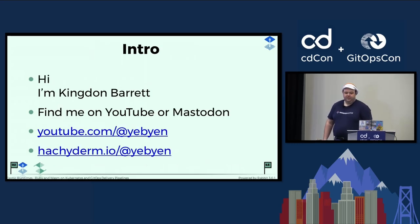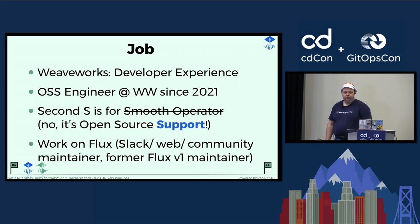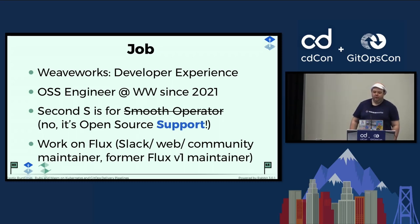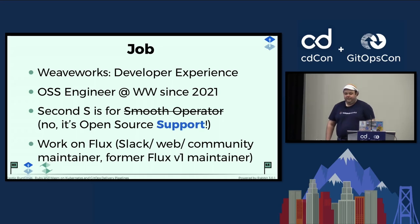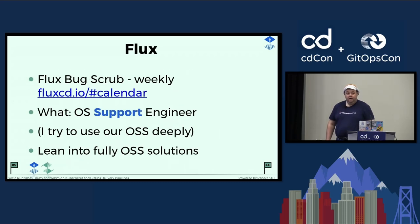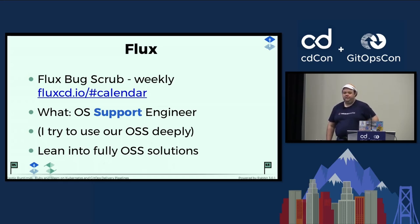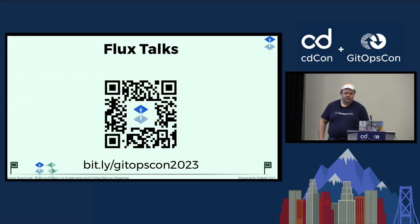I'm Kingdon. You can find me on YouTube and Mastodon. I'm a developer experience member of the Weaveworks developer experience team, OSS engineer since 2021 — the S is for open source support. I work on Flux. You can find me on Slack as well, community maintainer, and I was a Flux v1 maintainer. You can also find me at the Flux bug scrub, which is my weekly event. We do support things there, and I try to use all of our open source as deeply as possible and lean into open source solutions as an open source support engineer.